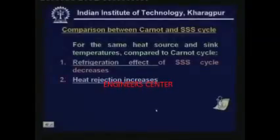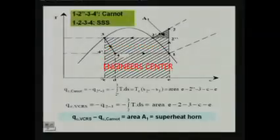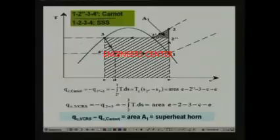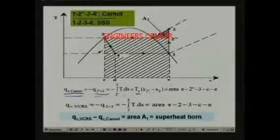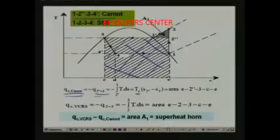Now let us look at heat rejection. For the same heat source and sink temperatures, compared to the Carnot cycle, heat rejection increases in a standard vapor compression refrigerant cycle. On the T-S diagram, the Carnot cycle is 1, 2 dash, 3, 4 dash and the standard VCC is 1, 2, 3, 4. Heat rejection in the Carnot cycle is the heat rejected during process 2 dash to 3, equal to T_C into (S2 dash minus S3), that is area E 2 dash 3 CE.